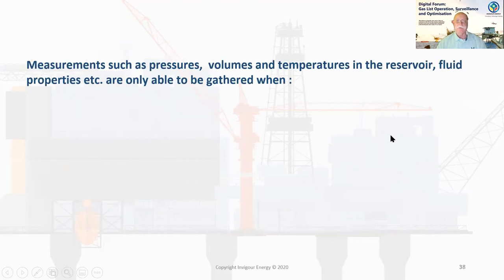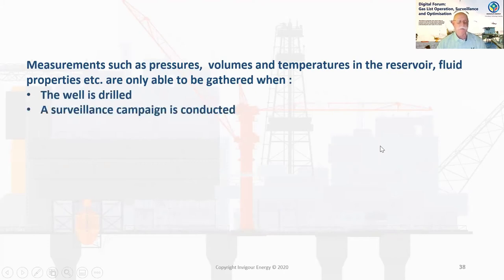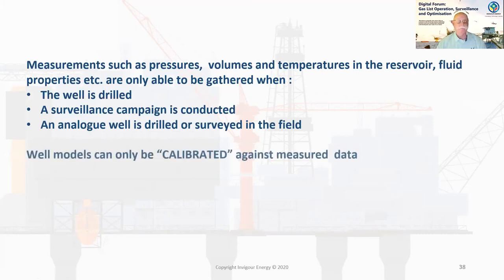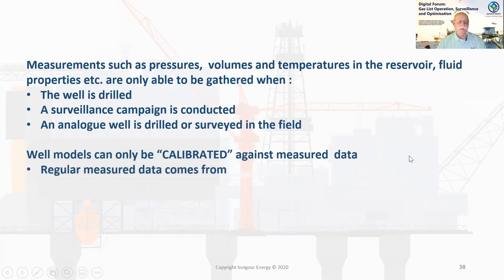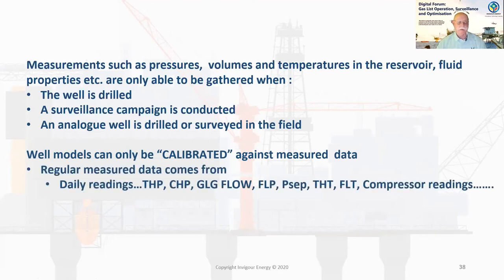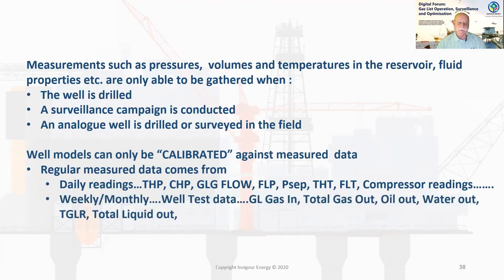Measurements such as pressures, volumes, temperatures in the reservoir, and fluid properties are only able to be gathered when the well is drilled, a surveillance campaign is conducted, or an analog well is drilled or surveyed in the field. Well models can only be calibrated against measured data. Regular measured data comes from daily readings — tubing head pressure, gas lift gas flow, flow line pressure, tubing head temperature, compressor readings — and weekly or monthly well test data: gas lift gas in, total gas out, water out, total gas-liquid ratio.